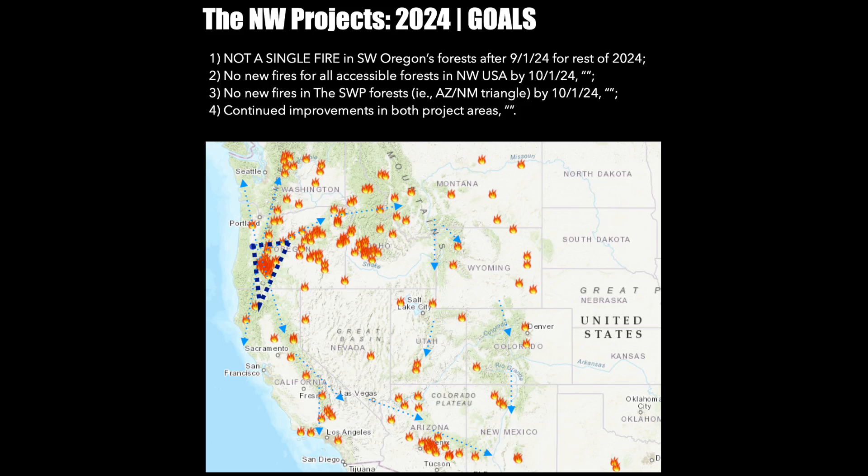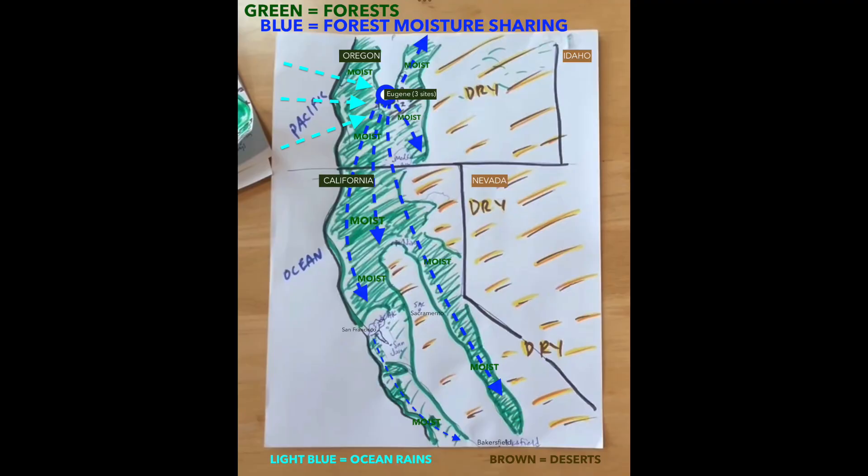And lastly, continued improvements in both areas. We want to see the entire system come back online as a lush, moisture circulating system. It's not going to happen in one year, but we can stimulate the process for it to happen through the fall. I'm pretty sure.